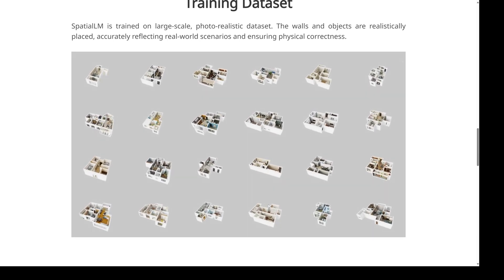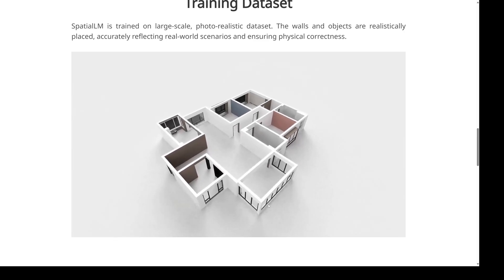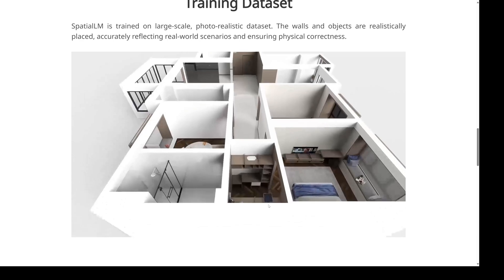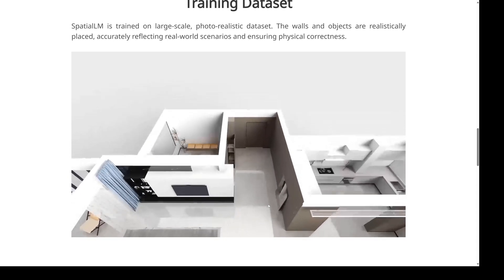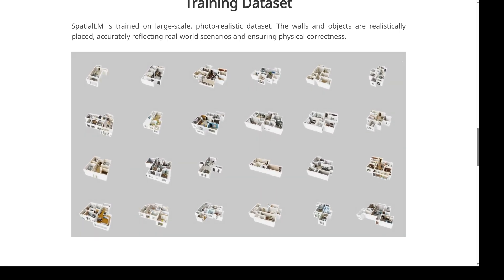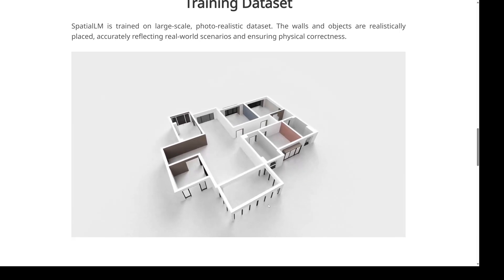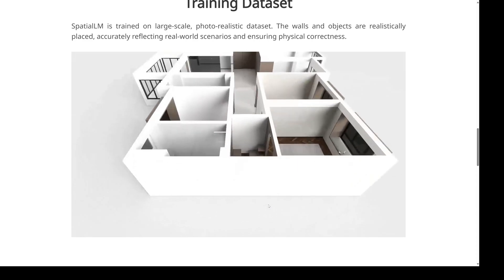Spatial LM is also flexible about where data comes from. It can work with point clouds generated from standard video — just what you'd shoot on your phone — but it can also handle RGBD images, which have depth information built in, and even high-precision LIDAR scans, the kind used in self-driving cars. This versatility is a big step forward from earlier systems, which were usually designed to work with only one specific type of sensor.